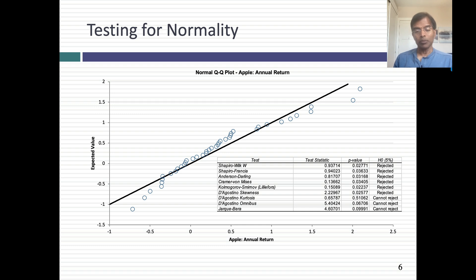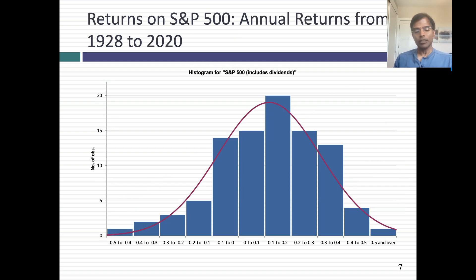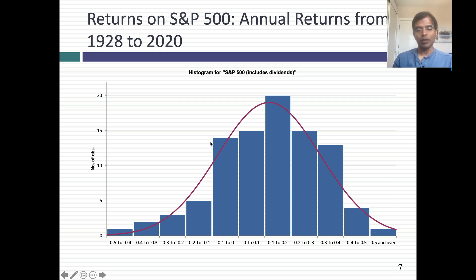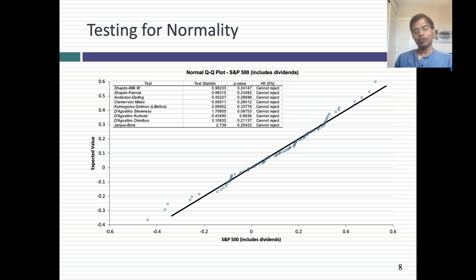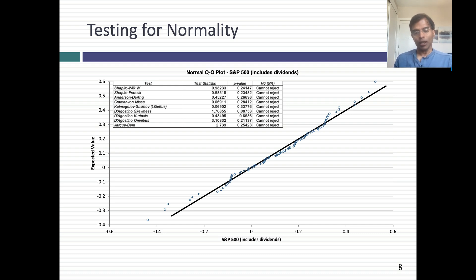What does that mean? Not that you can't look at the data on Apple, but that you have to be more careful about making statements that draw on the normal distribution. Let's move one step up the ladder and look at an index — the most widely followed index in the world, the S&P 500. One of the advantages you get with an index is you don't have a single stock; you have 500 stocks pulling in different directions. The extremes are not as extreme — you don't get 100 or 200 percent years, but there are big positive and big negative years. The normal distribution fits pretty well visually, and when you do the Q-Q plot the points are very close to the line. In fact, none of the tests reject the normality hypothesis. Annual returns on the S&P 500 are close to normally distributed.